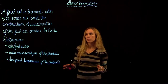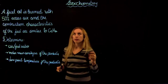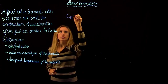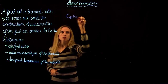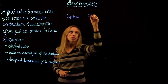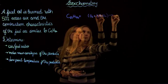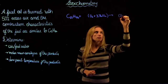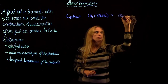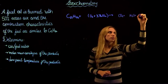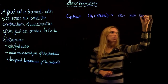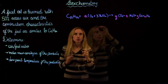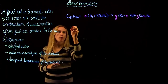Now if we write our combustion reaction, we have C12H26 plus oxygen — this represents the air — and the products of combustion are CO2 plus water plus oxygen plus nitrogen. We need to find the values, so we can write the equations for each of the components.